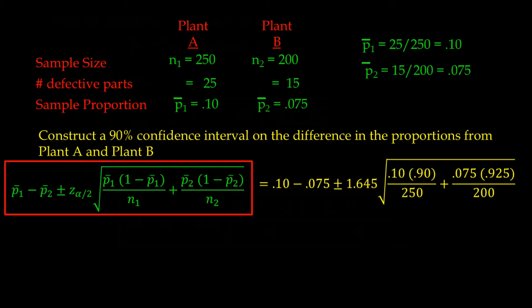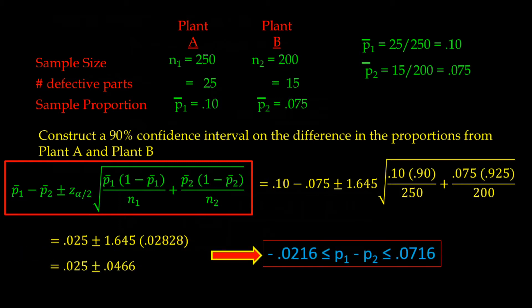The value 1.645 is our z of alpha divided in half. If you recall from previous tutorials, 1.645 is the z value used for a 90% confidence interval. You should know the z values for 90%, 95%, and 99% confidence intervals. After plugging in all the numbers, we get 0.025 plus and minus 1.645 times 0.02828, which gives us 0.025 plus and minus 0.0466. That gives us a 90% confidence interval on the difference between P₁ and P₂, and we are 90% confident that the true difference in the proportions of defective parts lies between those two limits.